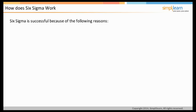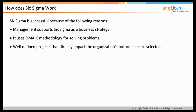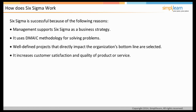Six Sigma is successful for the following reasons. Six Sigma is a management strategy that creates an environment where management supports it as a business strategy and not as a standalone approach. Six Sigma mainly emphasizes the DMAIC method of problem solving. Focus teams are assigned well-defined projects that directly influence the organization's bottom line, with customer satisfaction and increased quality being byproducts. Six Sigma also requires extensive use of statistical methods.